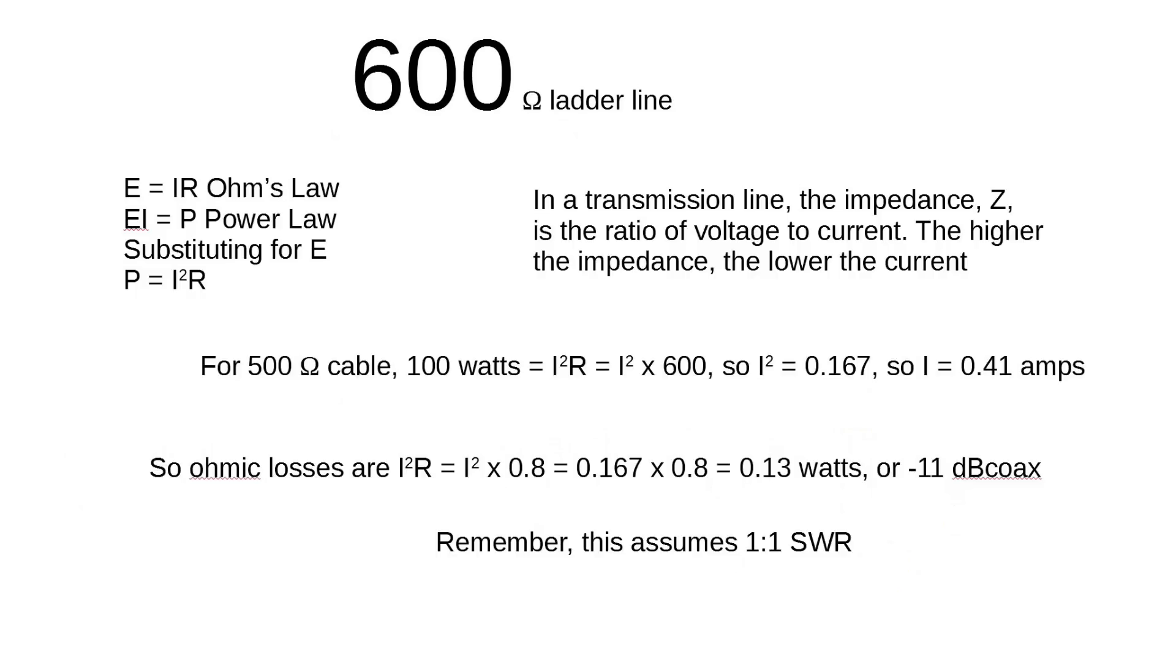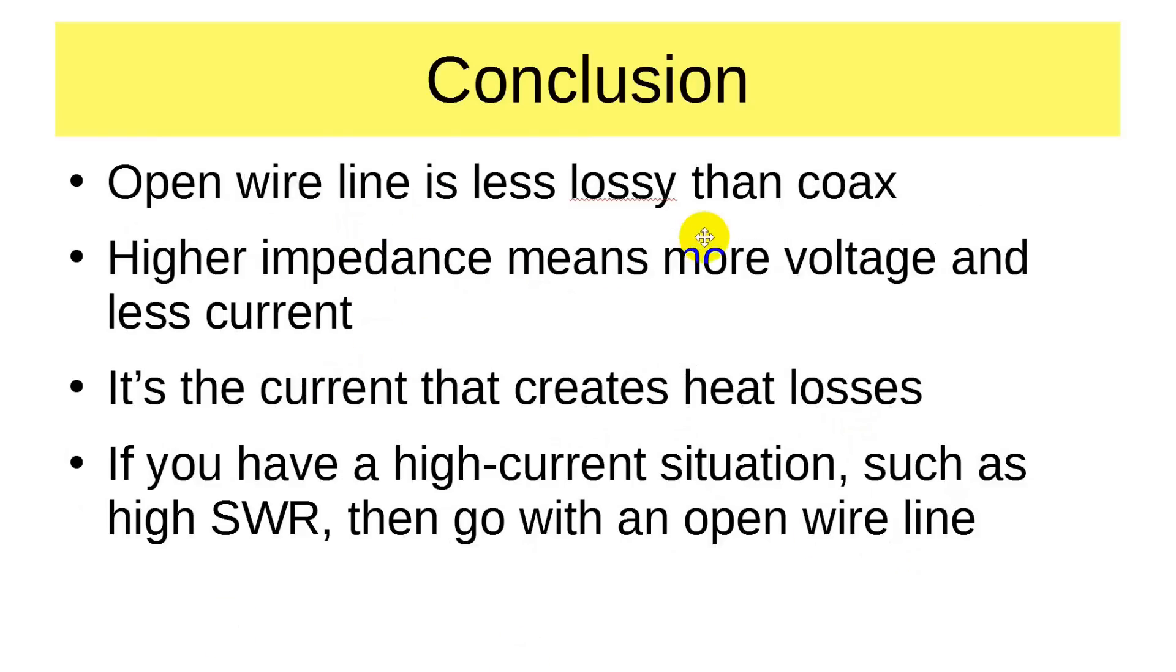So in conclusion, open wire line is less lossy than coax because of its higher impedance. The higher impedance means more voltage and less current. It's the current that creates the heat losses.